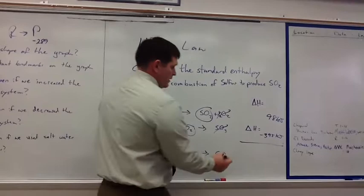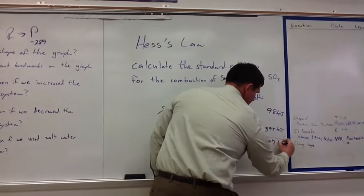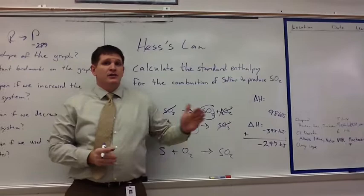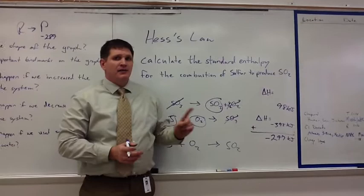My enthalpies, all I need to do now is sum them. And we know that 98 and negative 395 is going to give us negative 297 kilojoules. That's how we get to a standard enthalpy on an equation that's going to take a long time that we won't have a table for. Some of these things you won't find them in a table. We use Hess's law.